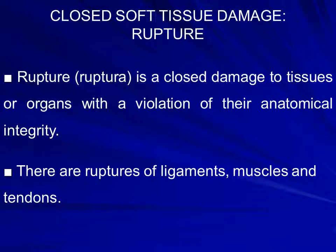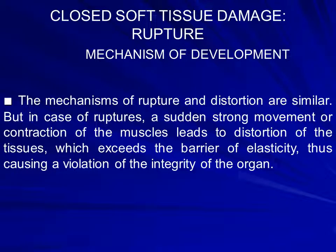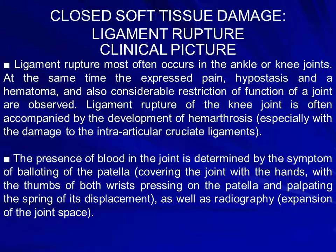Rupture is a closed damage to tissue or organs with violation of their anatomical integrity. There are ruptures of ligaments, muscles, and tendons. The mechanism of rupture and distortion are similar, but in rupture a sudden strong movement or contraction leads to distortion of tissue exceeding the barrier of elasticity. Ligament rupture most often occurs in the ankle or knee joints, with expressed pain, hematoma, and considerable restriction of joint function.